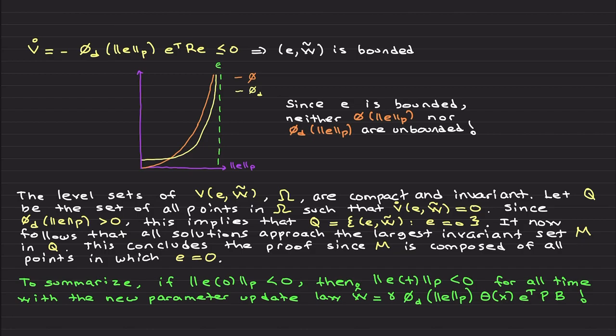This concludes the proof, since M is composed of all points such that e equals to zero. I basically used here an invariance-like result. To summarize what we accomplished: if you start inside this set, if your initial error is contained in the epsilon set, then you are guaranteed to stay in that set for all time with the new parameter update law, plus error goes to zero. So here, basically, this is your worst-case performance denoted by epsilon, and you are choosing the epsilon. Lyapunov barrier functions buy you the ability to assign a worst-case performance bound to your adaptive controller, which is great.